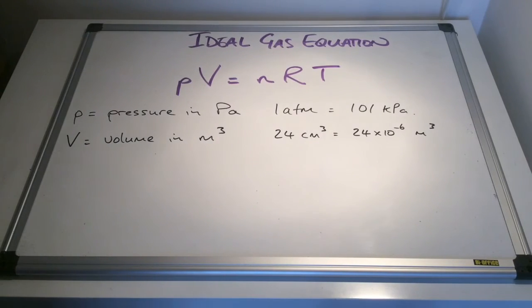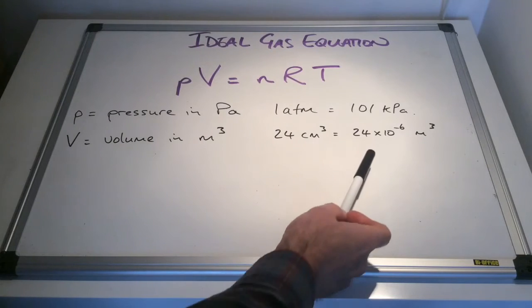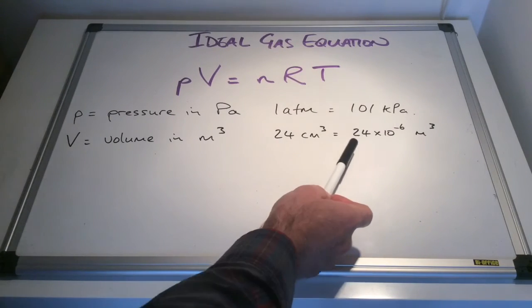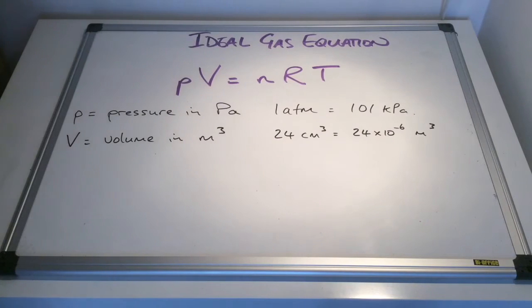If they give you the volume in centimetres cubed, you can see the conversion is slightly different. It's now 10 to the minus 6, so effectively you're dividing by a million. So 24 cm cubed is 24 times 10 to the minus 6 metres cubed.